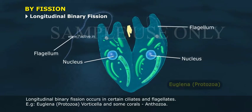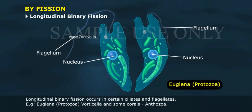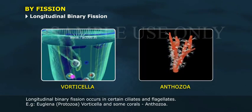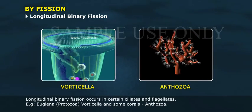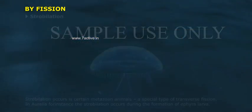Examples of longitudinal binary fission include Euglena, Vorticella, and some corals (Anthozoa).